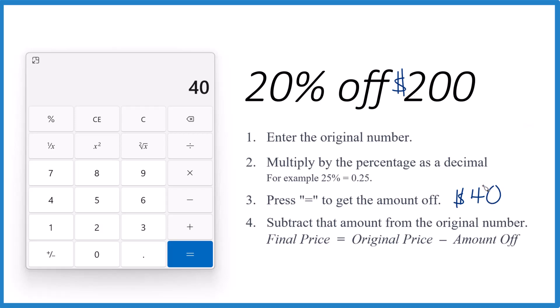If we want the final price, we're going to take the original, the $200 right here, and then we subtract that $40. That's how much we saved. So $200 minus $40, that is $160.